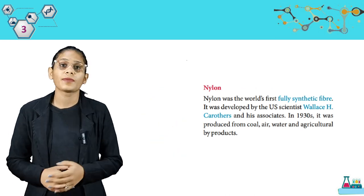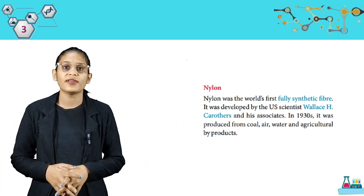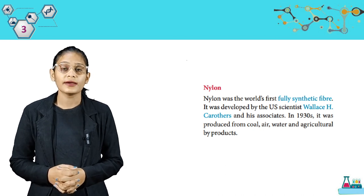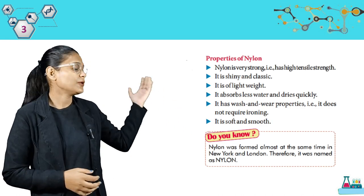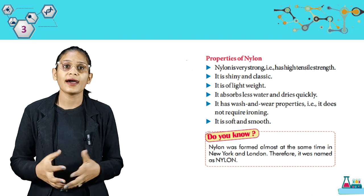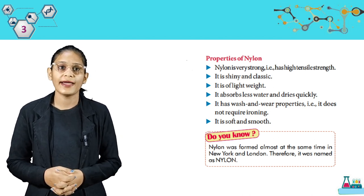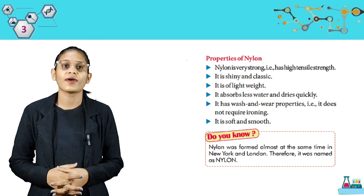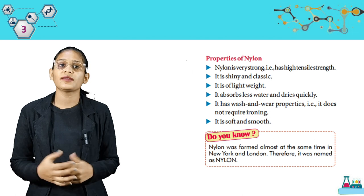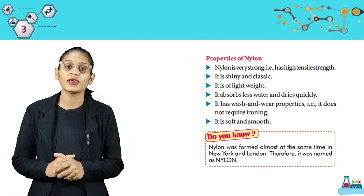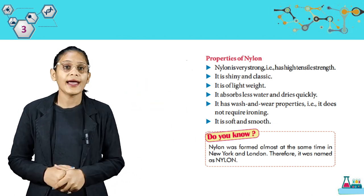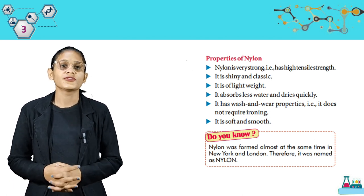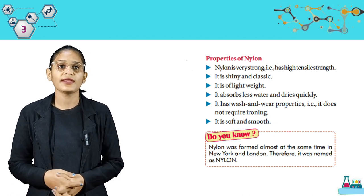Now we have nylon. Nylon was the world's first fully synthetic fiber. It was developed by the US scientist Wallace H. Carothers and his associates. In the 1930s, it was produced from coal, air, water and agricultural byproducts. Properties of nylon: nylon is very strong, meaning it has high tensile strength. It is shiny and elastic, of light weight, absorbs less water and dries quickly. It has wash-and-wear properties — that means it does not require ironing. It is soft and smooth. Do you know? Nylon was formed almost at the same time in New York and London, and therefore it was named nylon.